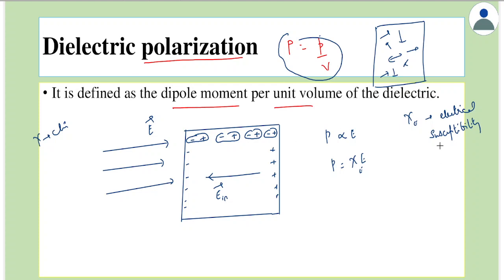This is a common English word, susceptible, which means how much it is prone to be polarized. So from here we can say chi, that is susceptibility, is equal to P by E. This is what is about the electric polarization.